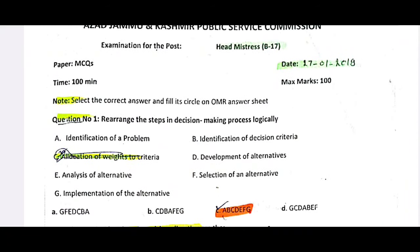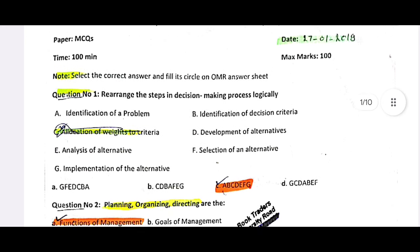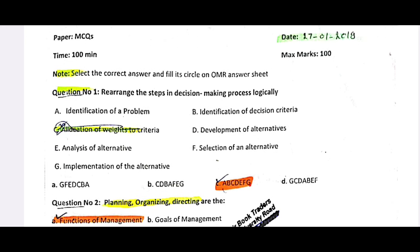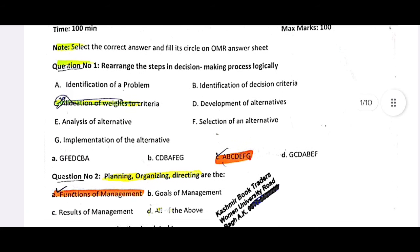The first statement is: rearrange the steps in the decision-making process logically. If there is no problem, then first you have to identify the problem, then you have to set criteria for it, and then set the steps further. From the given options A to G in sub-sequence, option number C is correct.